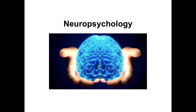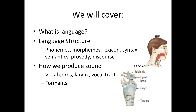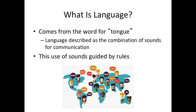Hi everyone, welcome back to neuropsychology. Today we are going to start covering chapter 19, which is everything about language. In this video we will talk about what language is, the structure of language, different definitions including phonemes, morphemes, our lexicon, syntax, semantics, prosody, and discourse. We'll also talk about how we create sound, including our vocal cords, larynx, vocal tract, and formants.